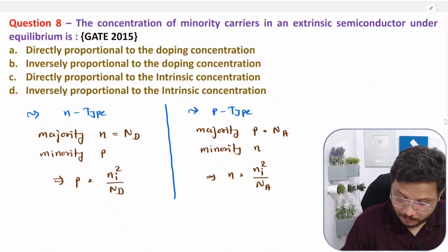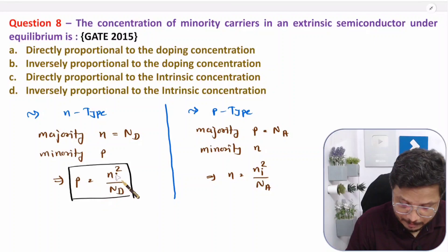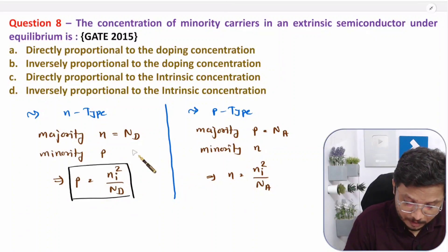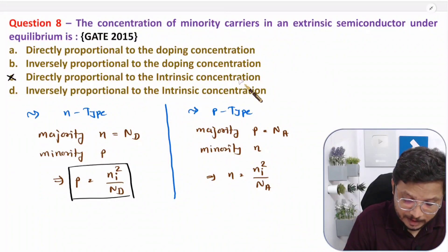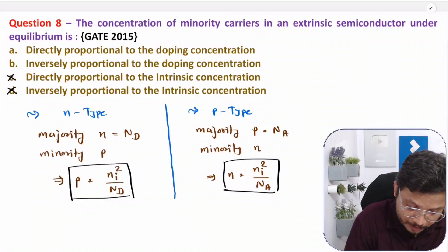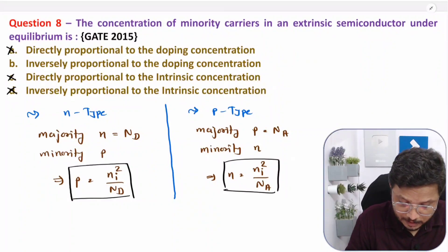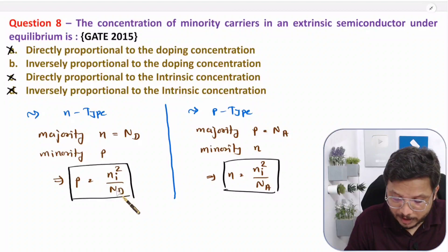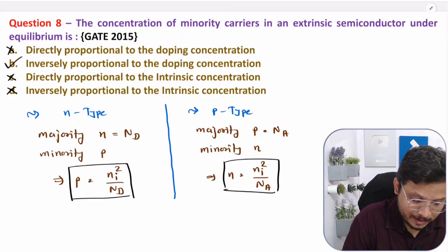From this relation, minority carrier is directly proportional to the square of intrinsic concentration Ni. So options suggesting direct proportionality to intrinsic concentration (not squared) are false. Minority is inversely proportional to doping concentration — that is correct. So the answer is that minority carrier concentration is inversely proportional to doping concentration.